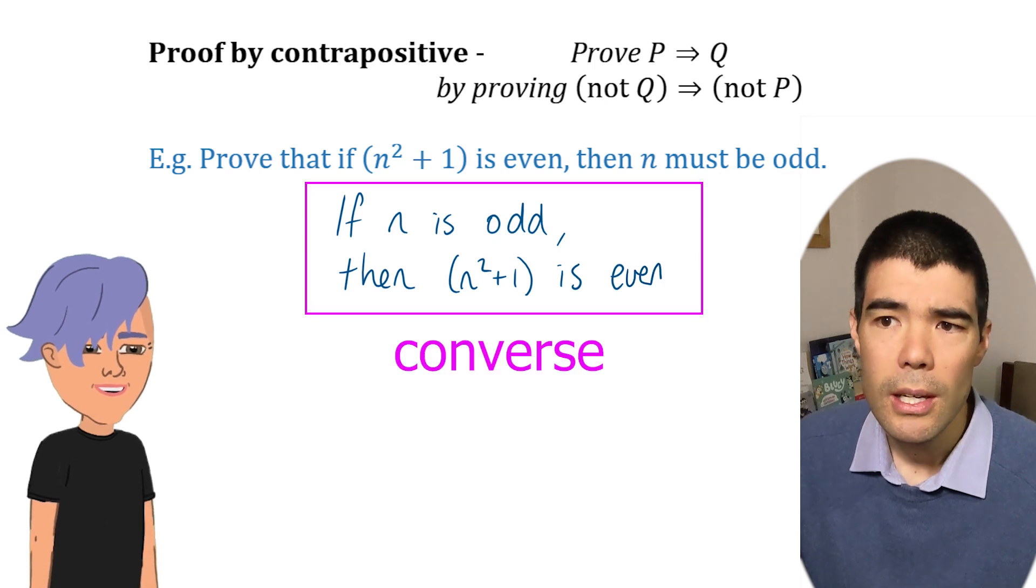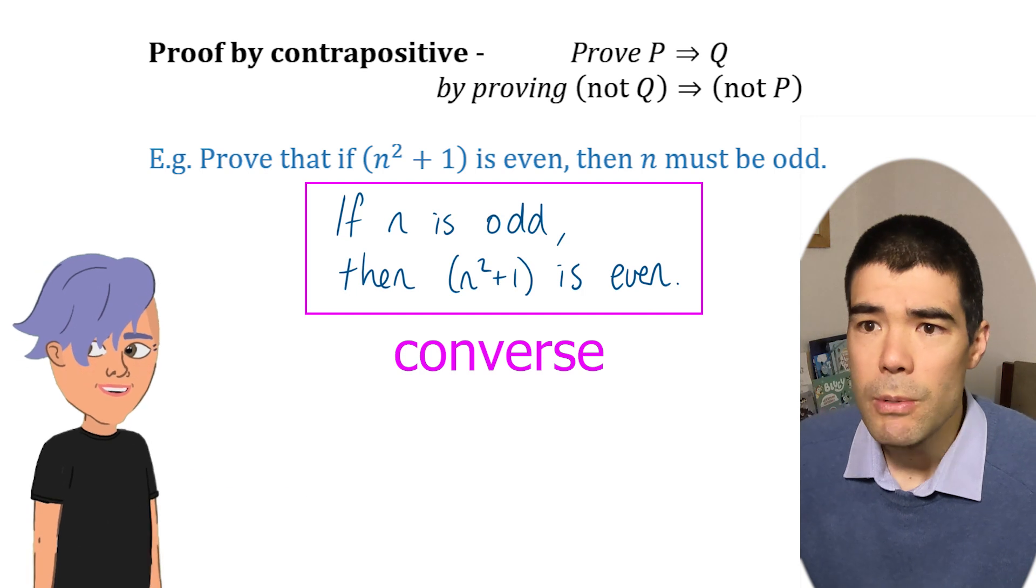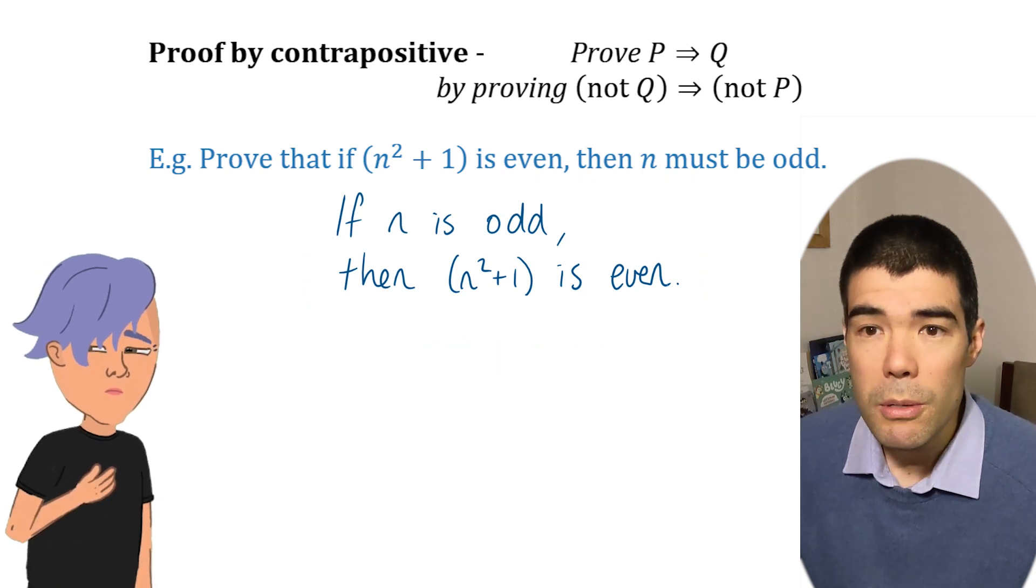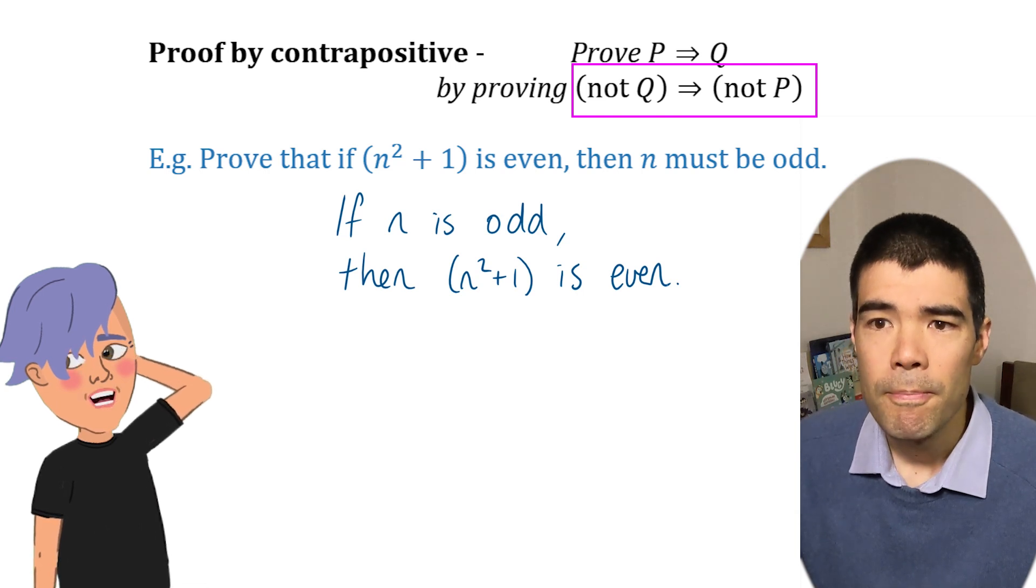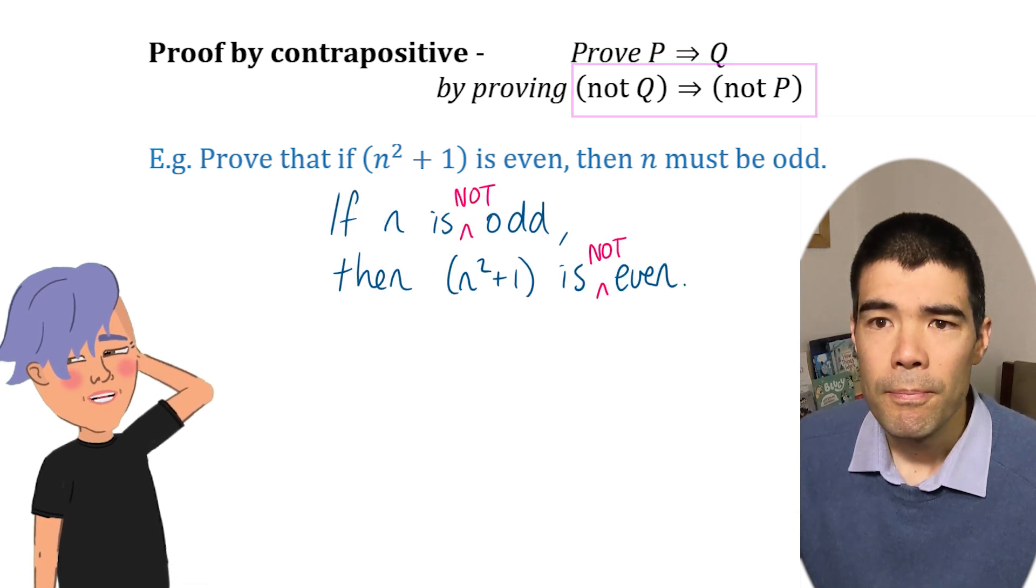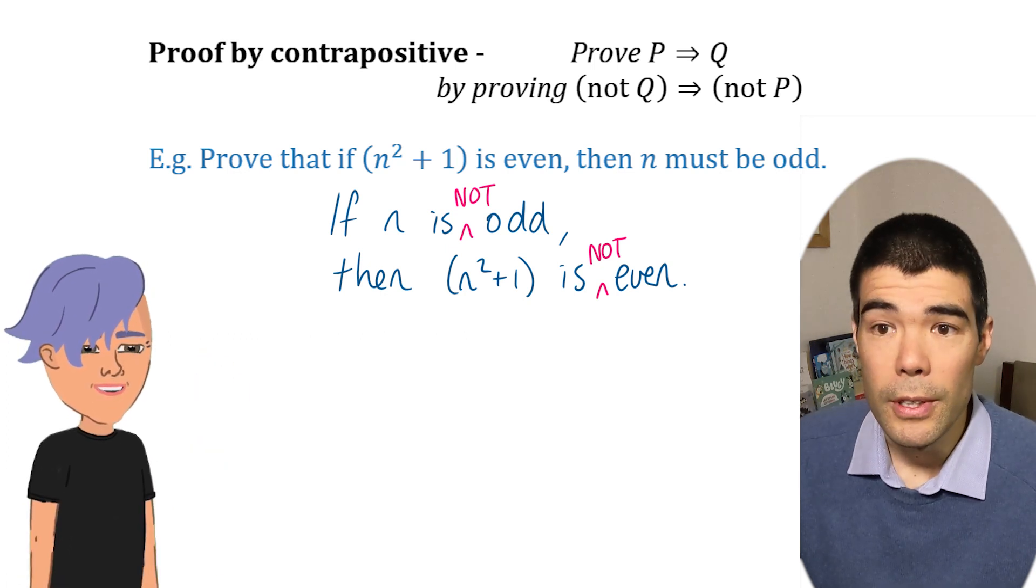It's possible for the original statement to be true and the converse to be false. The contrapositive, remember, is not q implies not p. Oh, yeah, yeah, right, right. So if n is not odd, then n squared plus one is not even. Yeah, that's it. Now you need to prove it.